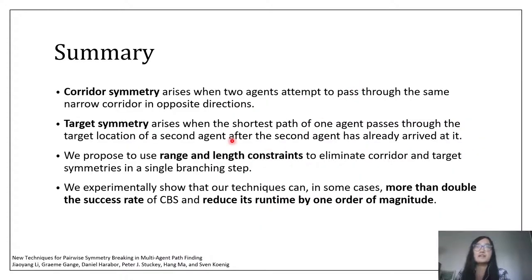To summarize, in this work, we study corridor and target symmetry for the multi-agent pathfinding problem. We propose range and length constraints to eliminate corridor and target symmetries in a single branching step. We show experimentally that our techniques can, in some cases, more than double the success rate of CBS and reduce its runtime by one order of magnitude. And this ends my talk. Thanks for listening.